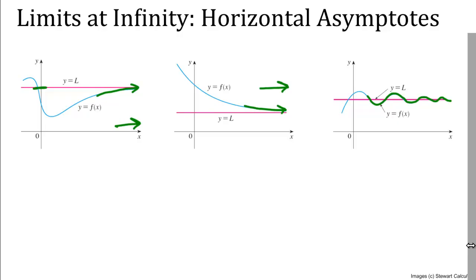So this brings up an important difference between horizontal and vertical asymptotes. Vertical asymptotes, you can't cross.